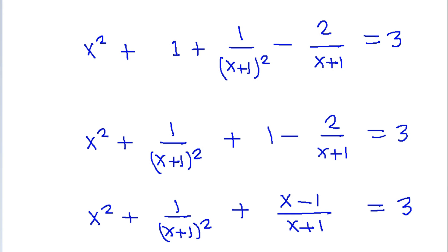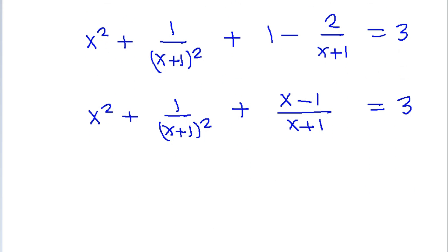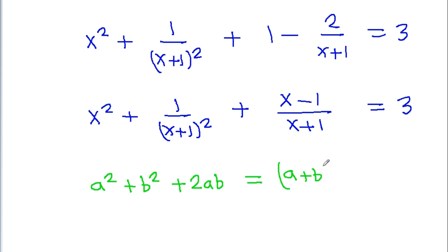Now we know that a squared plus b squared plus 2ab is equal to a plus b whole squared. So we have x squared plus 1 by x plus 1 whole squared, and we need 2ab which is 2x by x plus 1.